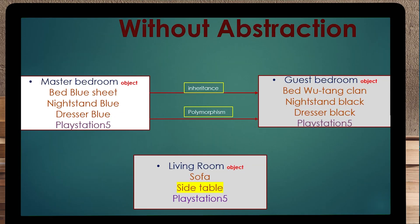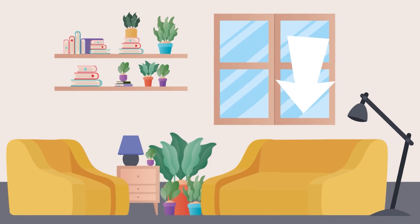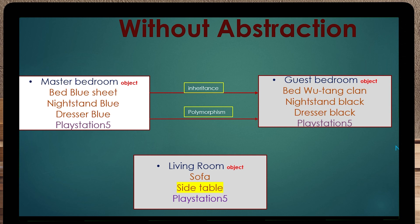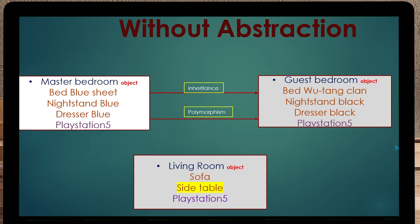Another example would be abstraction. Abstraction is a little more difficult to get your arm around. Going back to the original example — the master bedroom object, the guest bedroom object inheriting from it and then using polymorphism to change everything inherited — we changed it to Wu-Tang Clan sheets, black nightstand, and black dresser. Now I've introduced another object called the living room object. The living room object has a sofa, side table, and also has a PlayStation. Without abstraction, we notice the PlayStation is in every single object — we have duplication of code.